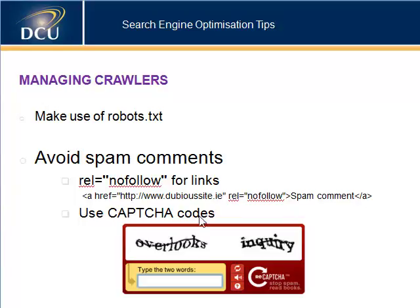CAPTCHA codes are another way of avoiding spam comments. CAPTCHA stands for Completely Automated Public Turing test to tell Computers and Humans Apart. It's a program that protects websites against bots by generating tests that humans can pass but current computer programs cannot. Applications include preventing comment spam in blogs, protecting website registration to ensure only humans can register, and protecting email addresses from scrapers by requiring humans to solve a CAPTCHA before revealing an email address.